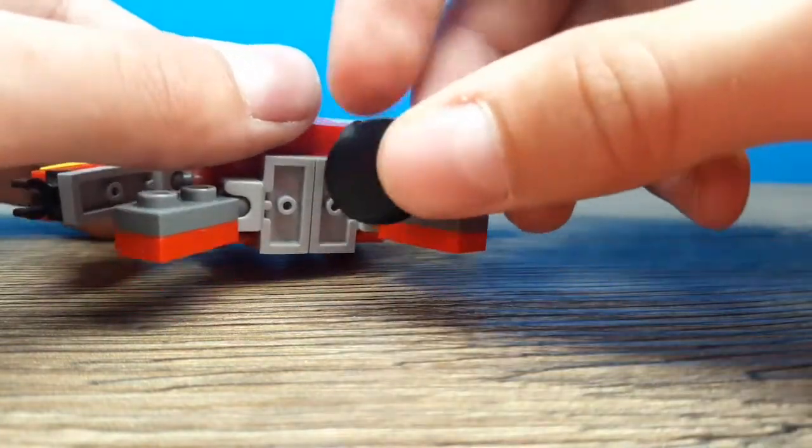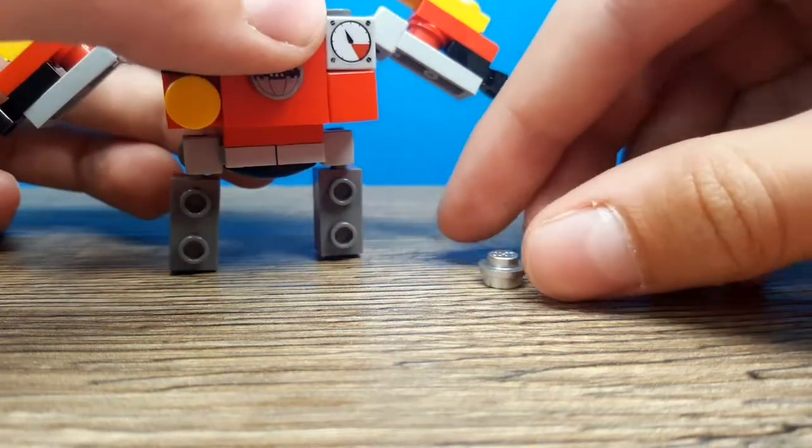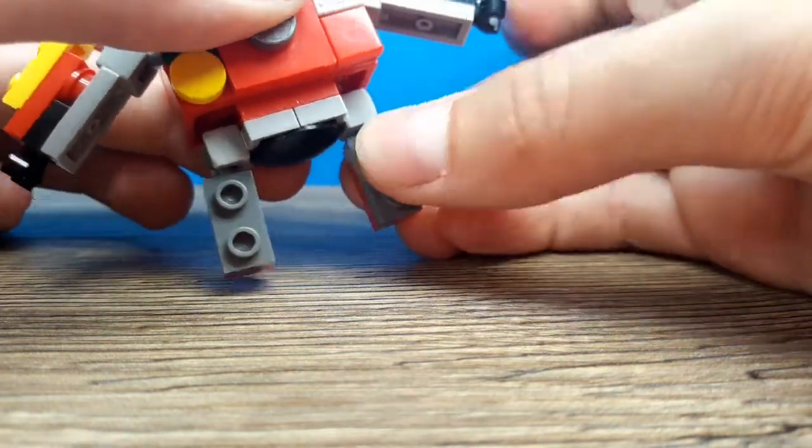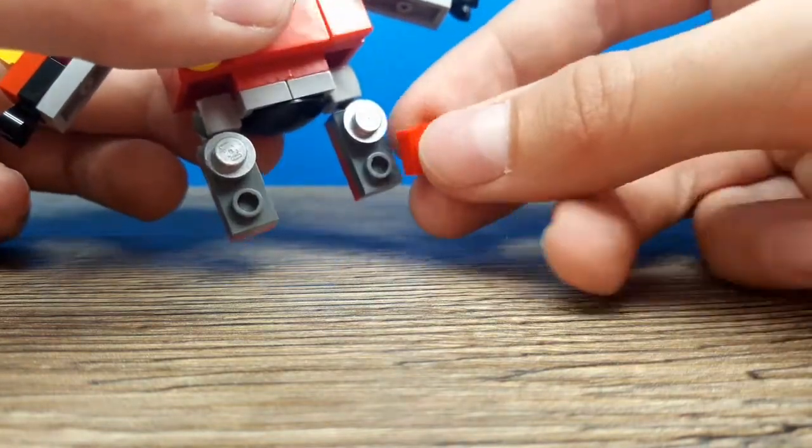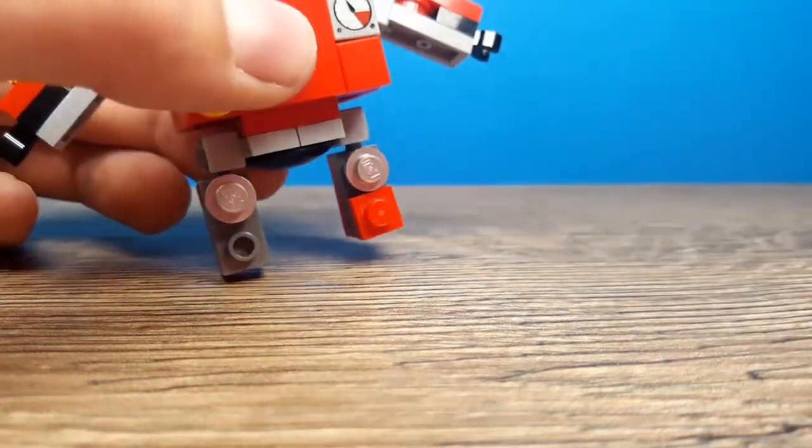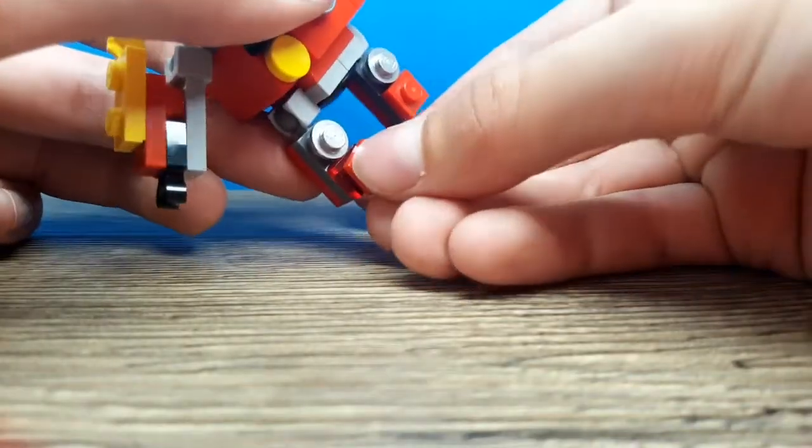Underneath put a 2x2 black inverted slope or tile. Put a 1x1 silver stud on this place on either leg. Put a red 1x1 plate underneath on either leg. Add a red cheese slope in this place on both legs.